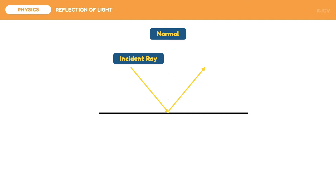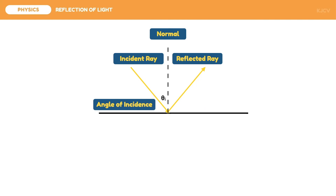The light coming towards the reflective surface is the incident ray. The light going away from the reflective surface as it bounces off is the reflected ray. The incident ray forms an angle of theta sub i, which is measured from the normal — this is called the angle of incidence. Similarly, the reflected ray forms an angle of theta sub r measured from the normal, called the angle of reflection. In reflection of light, these two angles are always equal. This is what we call the law of reflection.